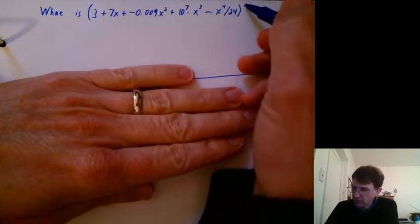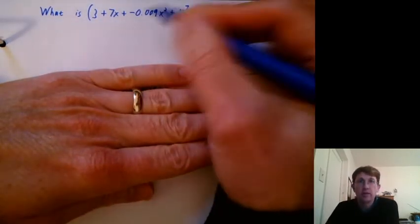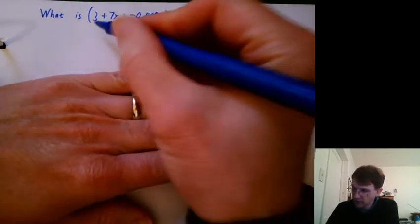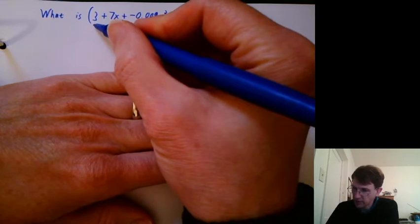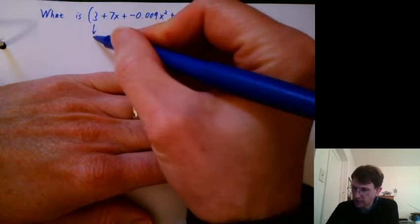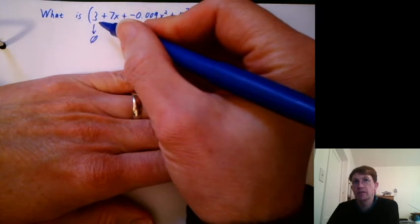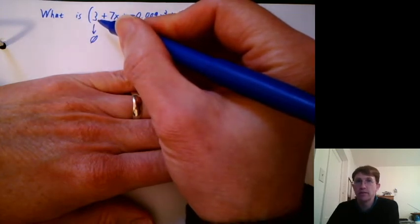Okay, well, the derivative of a sum or difference is just the derivative of each individual term. So I can say, well, what's the derivative of 3? Derivative of 3, 3 is a constant, so its derivative is 0. How much is 3 changing as x changes? 3 changes 0 as x changes.